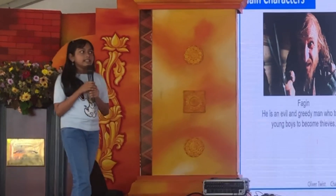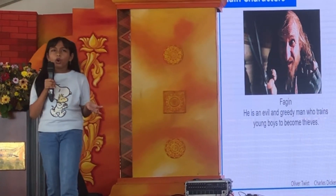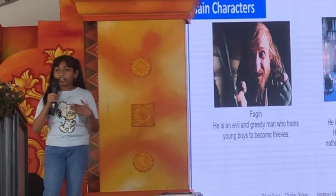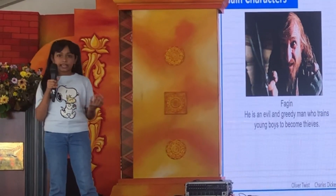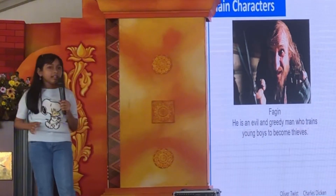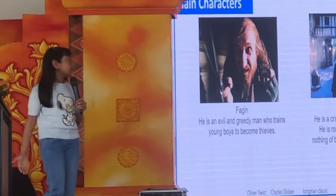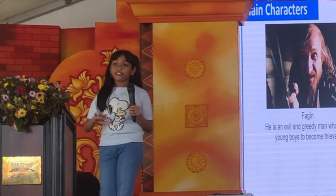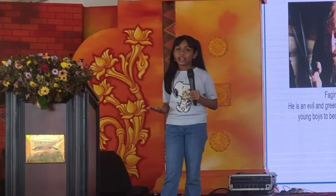Fagin is an evil, greedy man who teaches the children to steal. Bill Sykes is a criminal in Fagin's gang. He's a rough man and thinks nothing of hurting others when he gets angry.